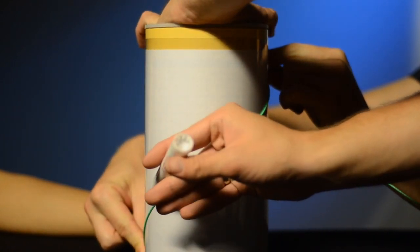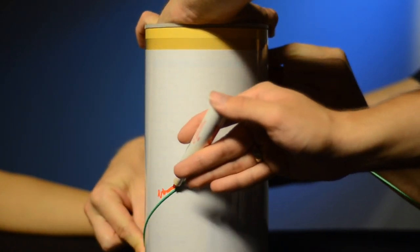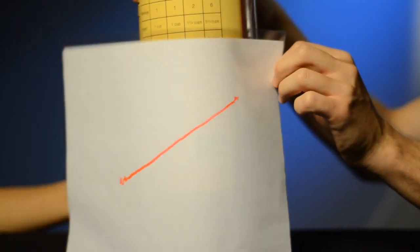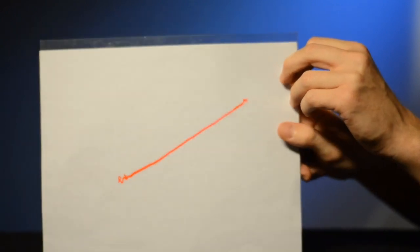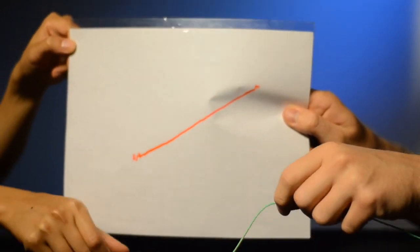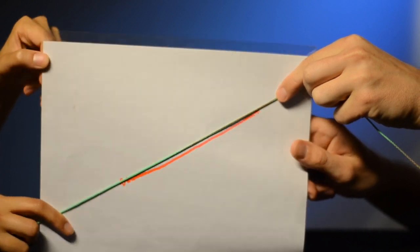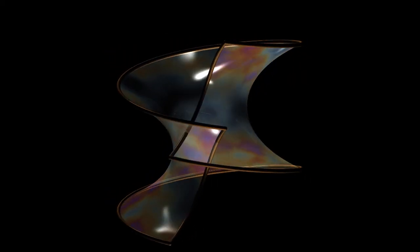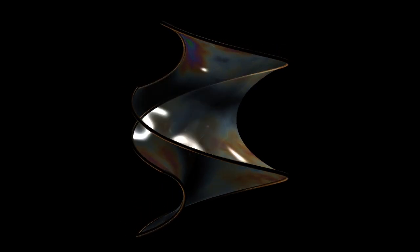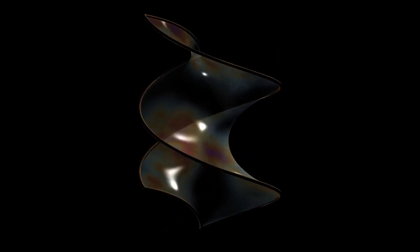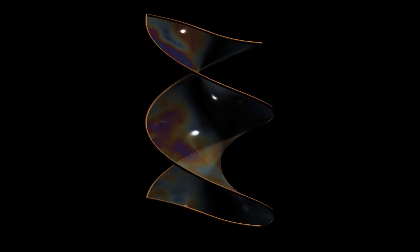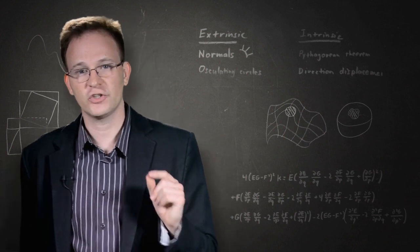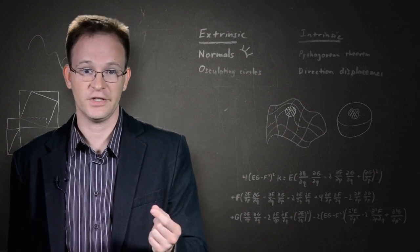That is, bending a plane into a cylinder and back doesn't change anything in the surface itself. The distances between two points, the shortest line between two points, angles, everything remains the same. The surface land residents would never even notice. Similarly, the catenoid and the helicoid have the same intrinsic characteristics and are formed from bending one into the other.